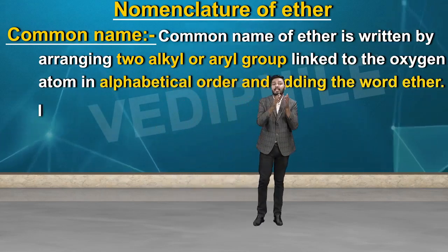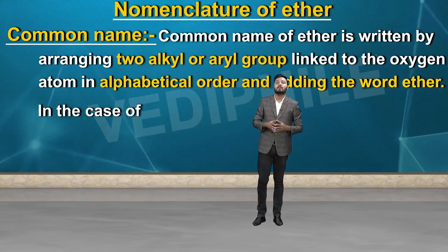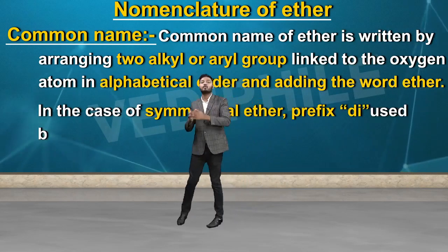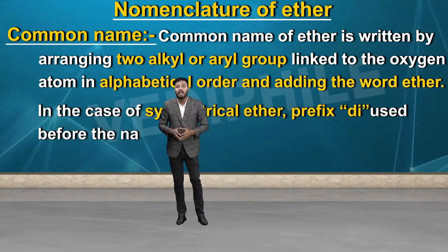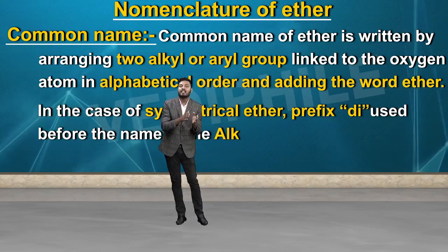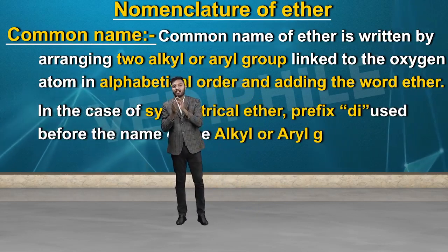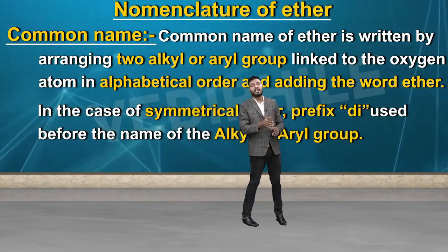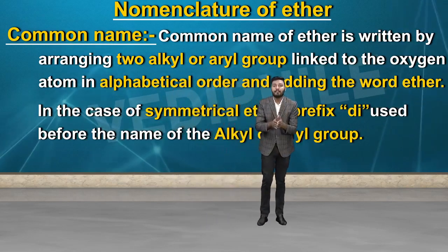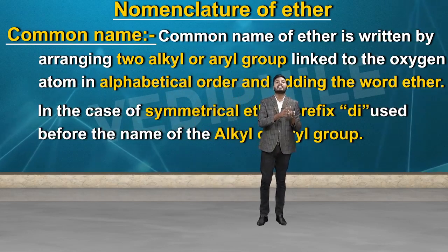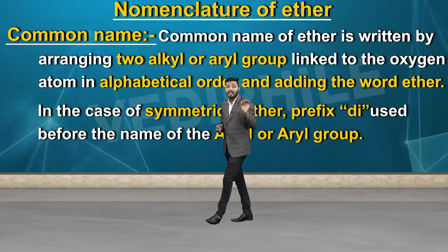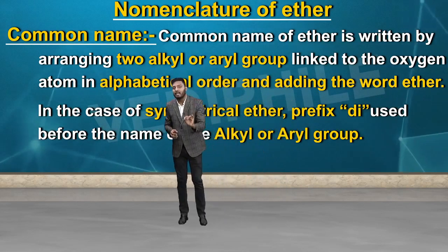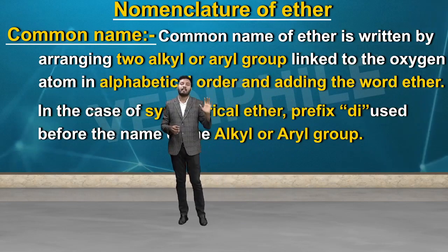In the case of symmetrical ether, the prefix 'di' is used before the name of the alkyl or aryl group. If the same group is present on both sides for a symmetric ether, we will use the prefix 'di'.